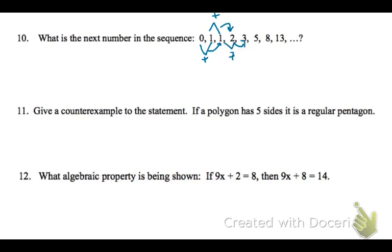Add 1 and 2, you get 3. And if you continue on, 2 plus 3 is 5, 3 plus 5 is 8, 5 plus 8 is 13. So we're going to add 8 and 13 to get 21.